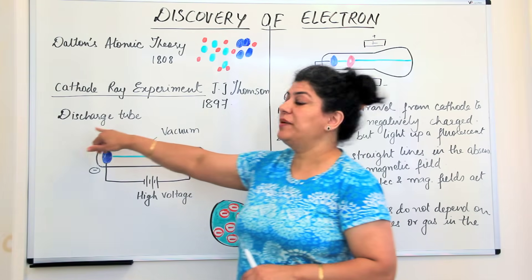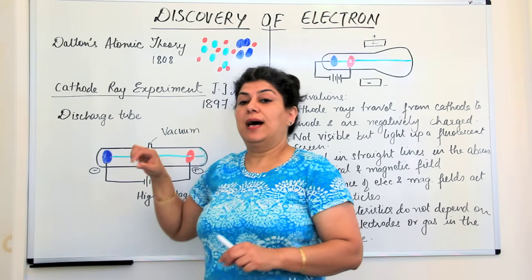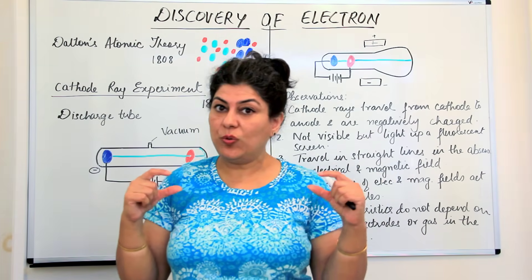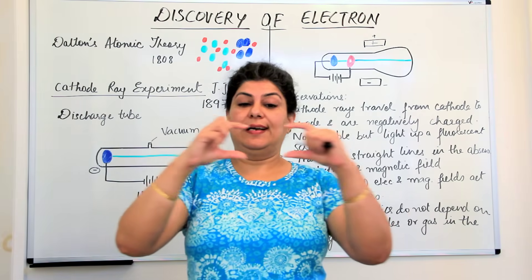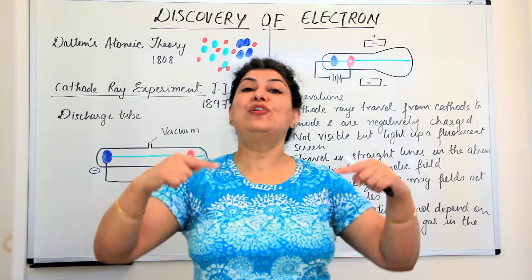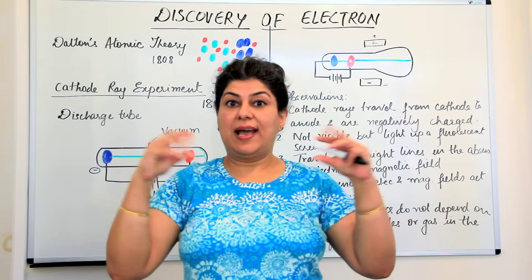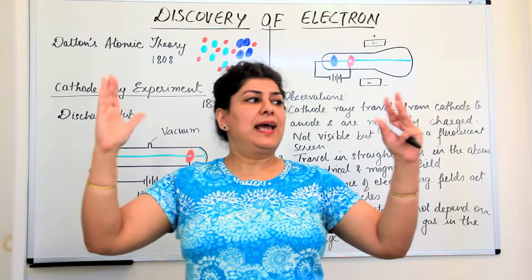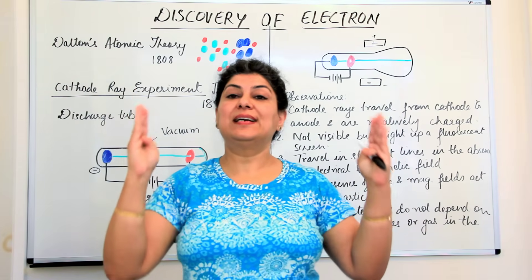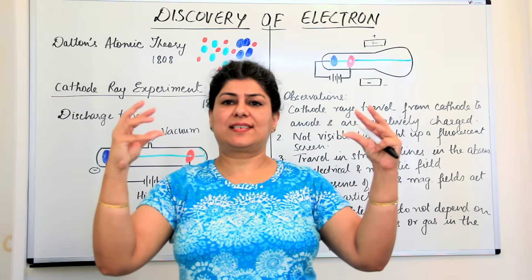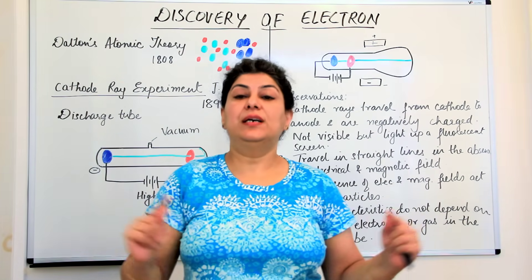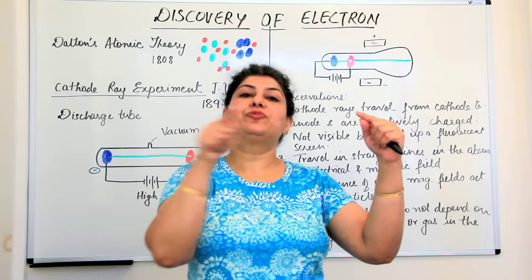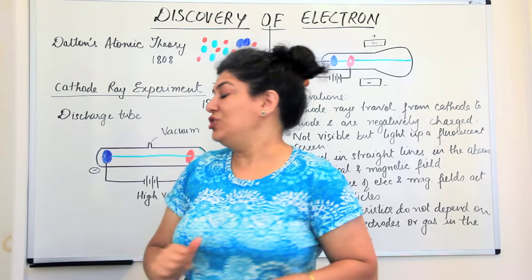Thomson carried out an experiment in a discharge tube. I would like you to imagine the discharge tube to be somewhat like a tube light that you have in your homes. The tube light is a glass tube with a fluorescent coating, and when it lights up the fluorescent screen illuminates. The two ends of the tube light have metallic discs connected to the electric source, which produces the beam of light that illuminates the tube light.